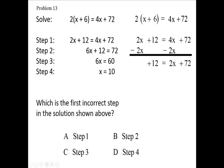2x is right. 6x is wrong. What they did, they added 2x and 4x and got 6x, but they shouldn't have added them because there's an equal sign between those.